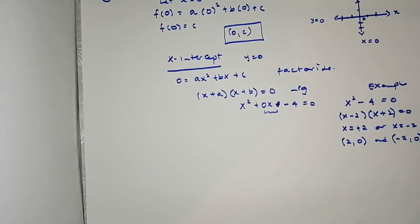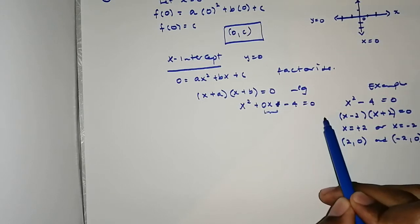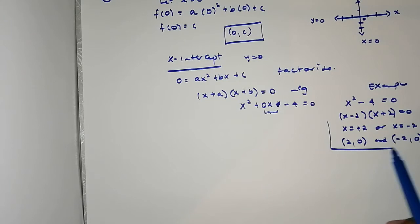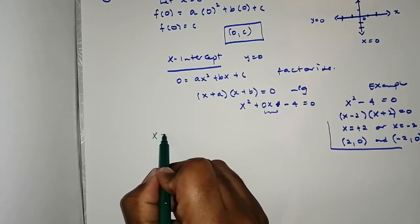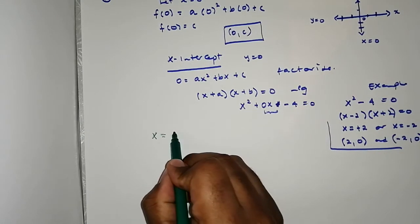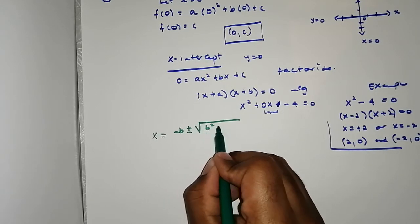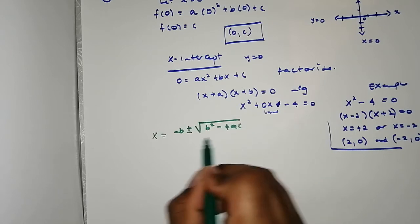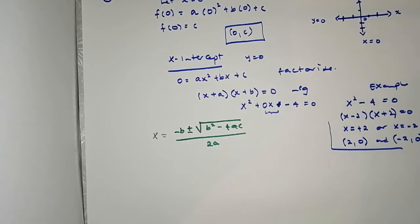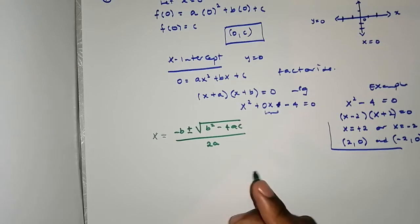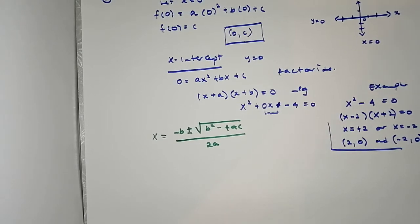You might be given quadratic equations that are not easy to factorize, and in such instances you use the quadratic formula: x = (−b ± √(b² − 4ac)) / 2a.